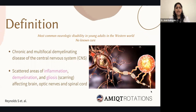Multiple sclerosis is the most common neurological disability in young adults in the Western world, and there is no known cure. It's a chronic and multifocal demyelinating disease of the central nervous system. Pathologically, scattered areas of inflammation, demyelination, and gliosis — which is scarring — are seen, predominantly in the brain, spinal cord, and the optic nerves.